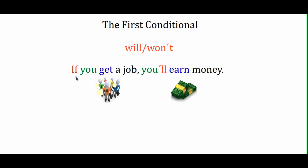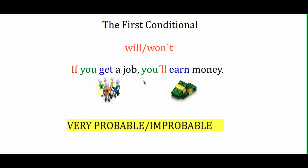If we choose 'will,' it means the consequence is very probable. Using 'won't' means it's improbable.